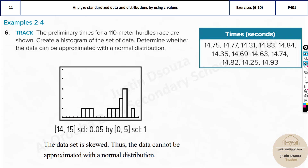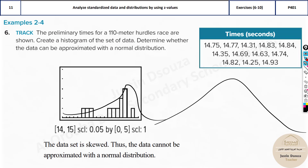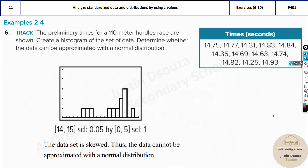Now, is it a normal distribution? A normal distribution is always shaped like a bell curve. Does this data have that shape? No — this is skewed. Among skew types, there is positively skewed and negatively skewed. Here the values are low at the beginning and then high, meaning it is negatively skewed. If the values were high first and then low, it would be positively skewed. So this is negatively skewed and therefore is not approximated by a normal curve.